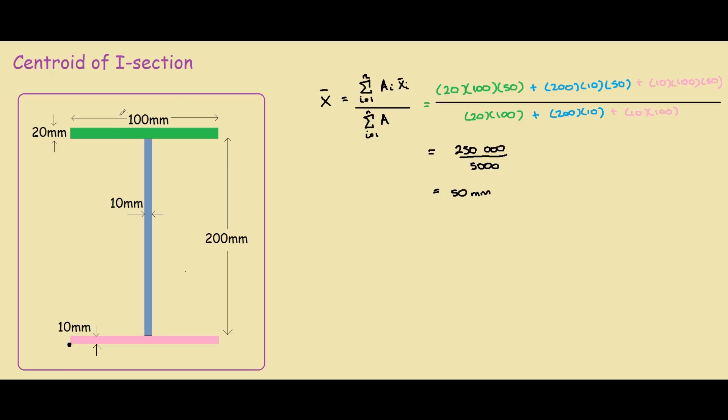This is what we expect because in the horizontal direction the I-beam is actually symmetrical, so the centroid we expected it to be here. We could have done this by intuition, but I wanted to show you how we do it using numbers.